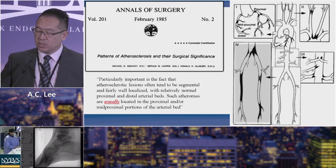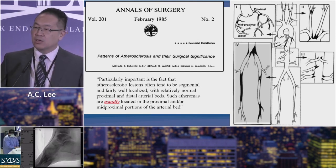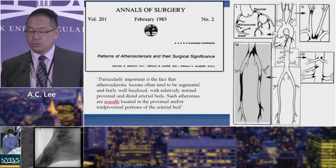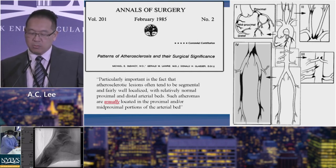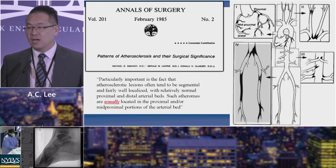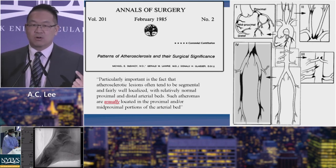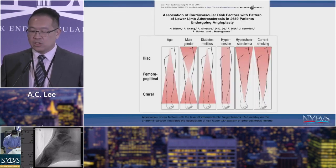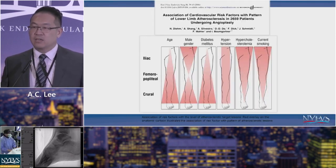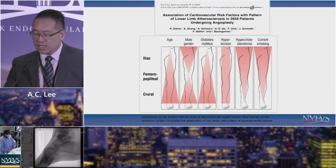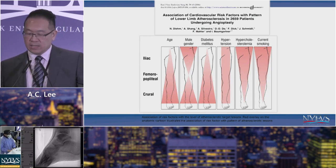Looking back at a 1985 paper by Michael DeBakey, when he described atherosclerotic plaque both in the heart and the vascular system, most of the plaque was in the proximal and mid-proximal portions of the arterial bed. But over time, with diabetes, chronic kidney disease, and an aging population, papers in the early 2000s started showing disease moving more distally.